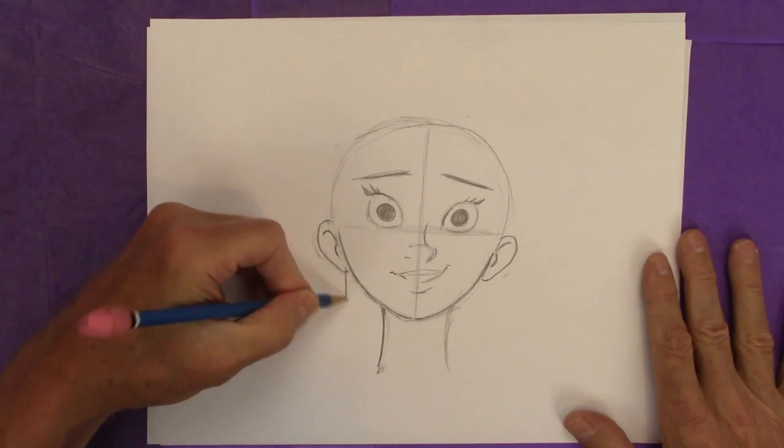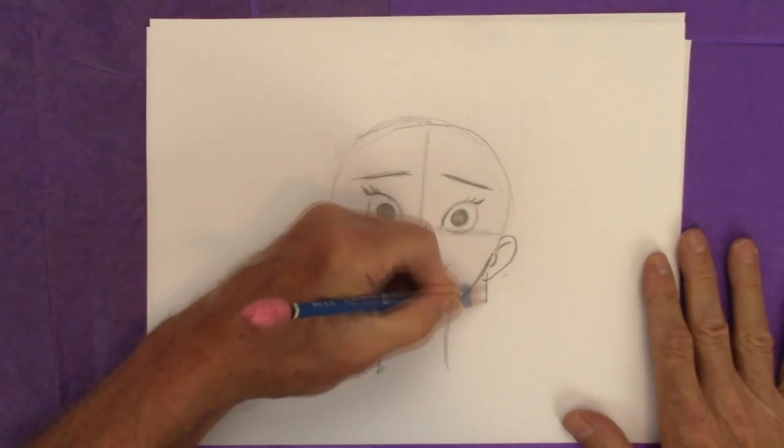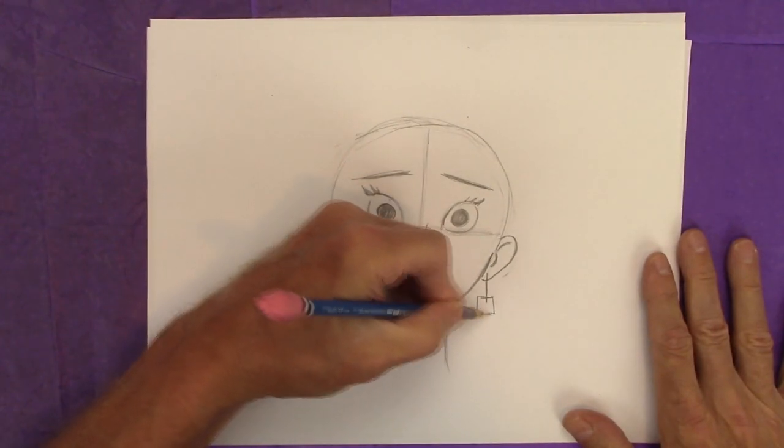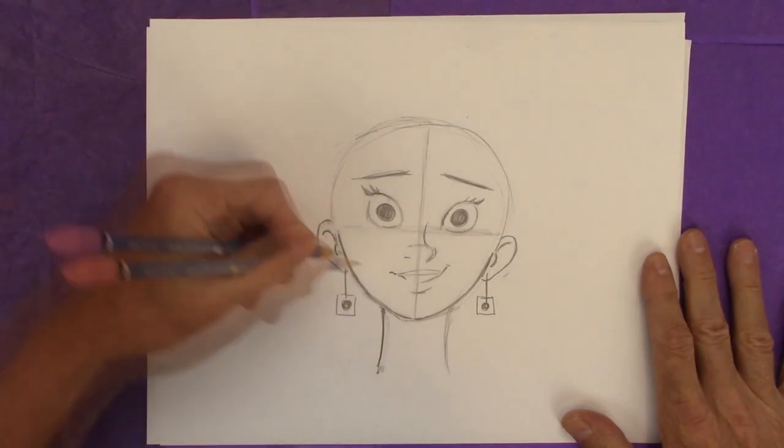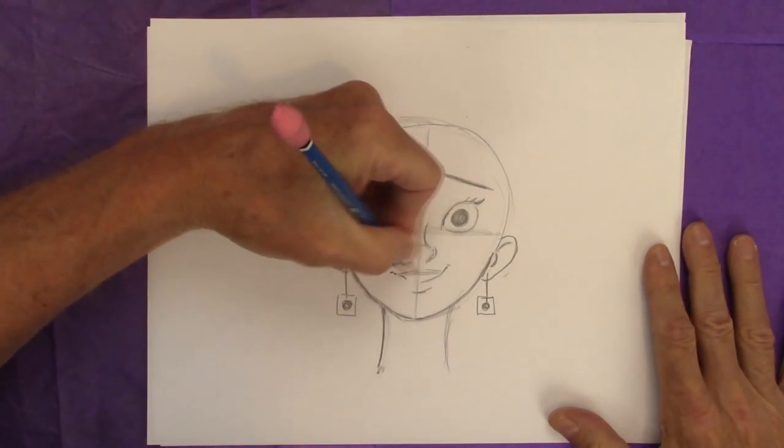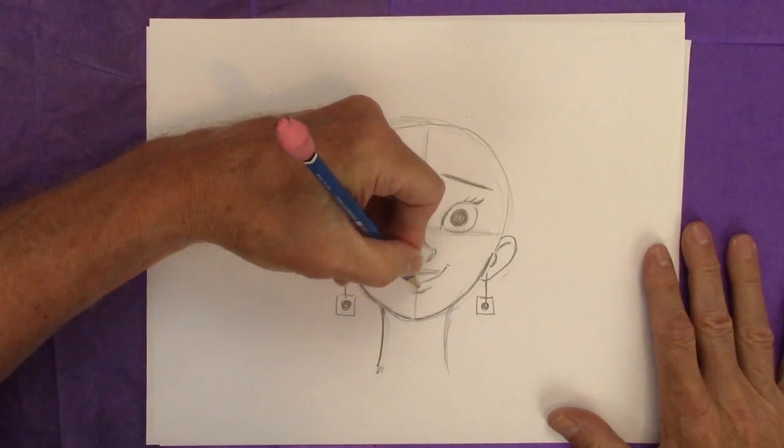How about some earrings? Different kinds of earrings. Nice. Just a stem like that. A square. A circle. And I'm also going to shade that upper lip and a little bit of the lower lip.